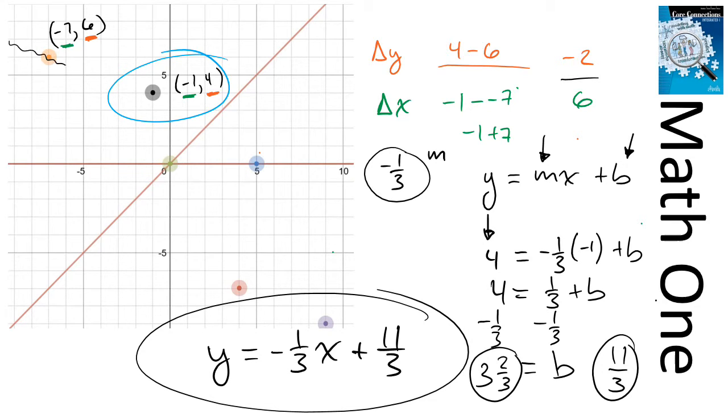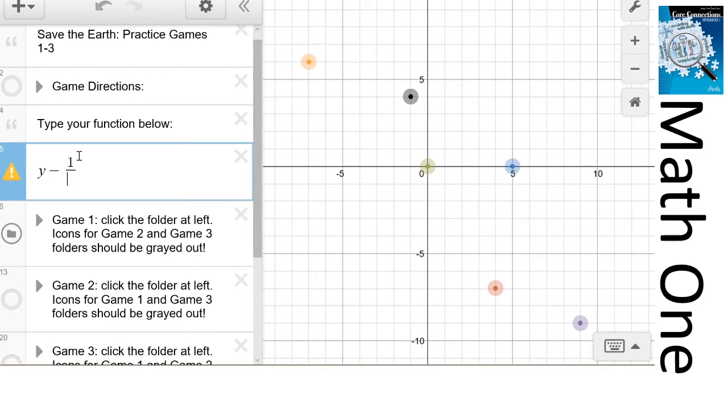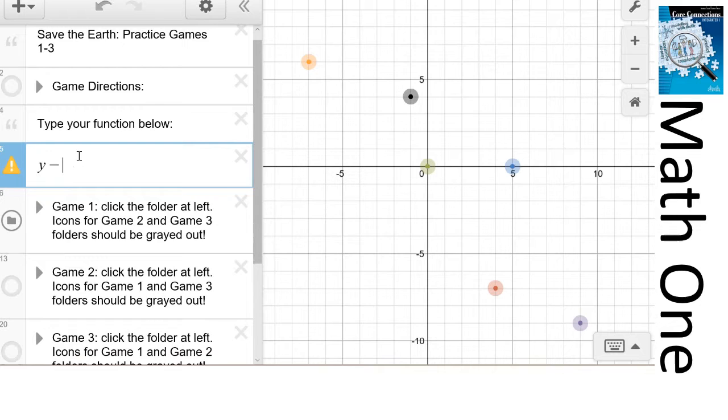Let's enter that and verify that indeed it gives us exactly the line that goes through these two points. I'm just going to enter that equation here. We think the slope was -1/3, so y equals -1/3, and I hit the right arrow to get out of the denominator there.